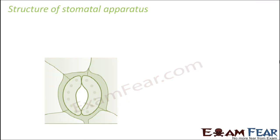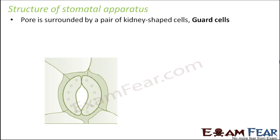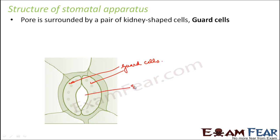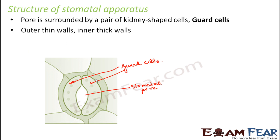Let us look at the structure of the stomatal apparatus. The stomata is a small pore surrounded by a pair of kidney-shaped guard cells, which act like bodyguards to the stomatal pore. The outer walls of guard cells are thin but the inner walls are thick. Because of this property, they help in opening and closing of stomata. When both guard cells bend, the stomata opens; when they shrink and come close together, the pore reduces.